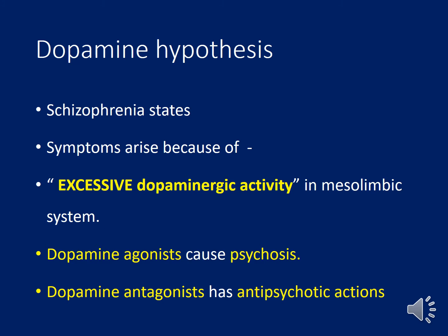All drugs for schizophrenia have equal efficacy but differ mainly in potency. They are classified into typical antipsychotics and atypical antipsychotics. Typical antipsychotics mainly act by blocking the dopamine D2 receptors, while atypical antipsychotics have weak D2 blocking activity.